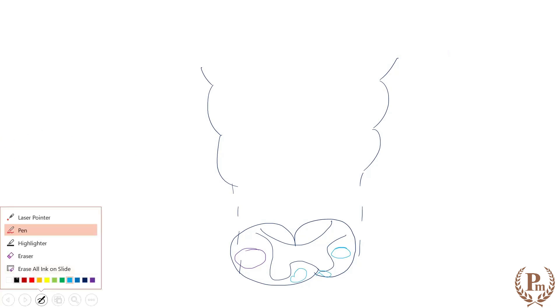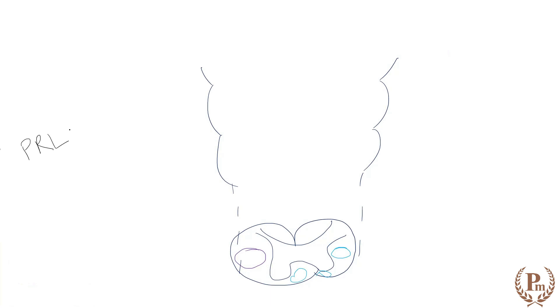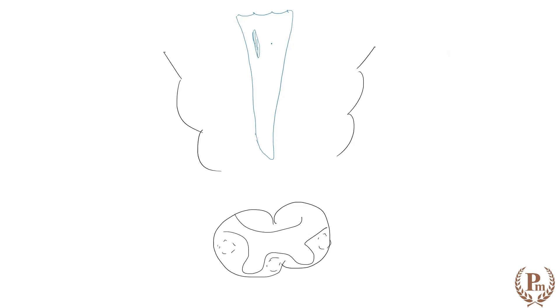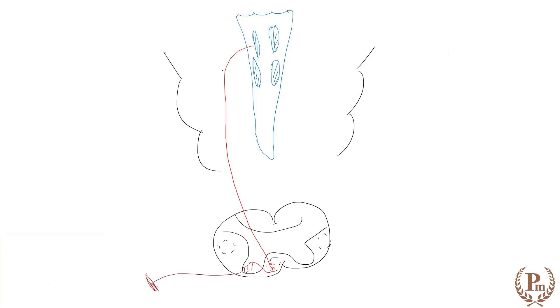The pontine reticular fibers are going to the anterior end. They come to the anterior side — the reticular formation is present in the brainstem. We have the pontine fibers and laterally the medullary fibers. The fibers originating from the pons go to the anterior side ipsilaterally. From there they give input to interneurons, which are finally going to go to the motor neurons. This is the pontine reticulospinal tract.